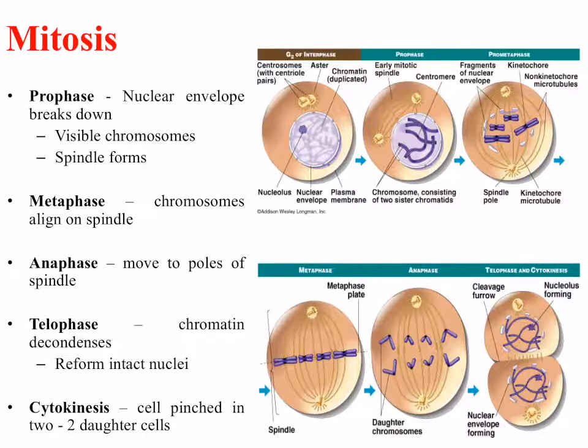The last part of mitosis is called cytokinesis, where the cell is pinched in two along the midline. There is a cleavage furrow and the formation of two distinct daughter cells.